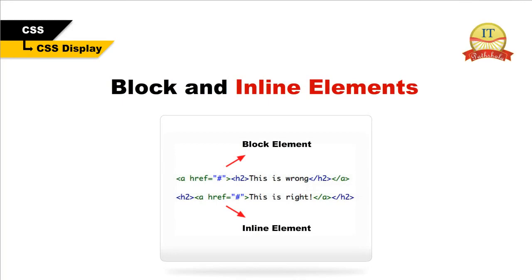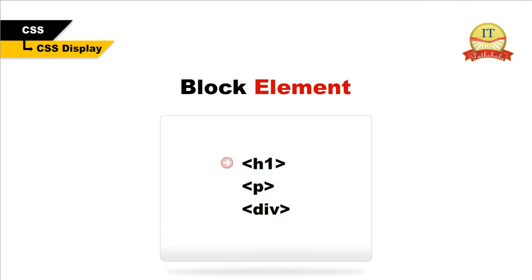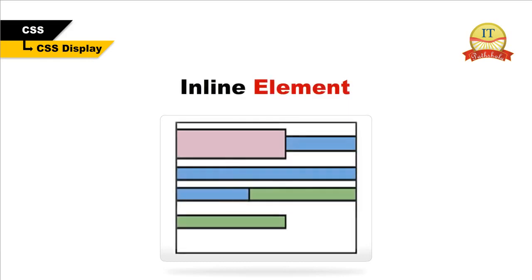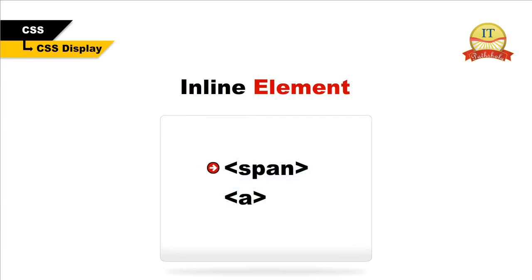A block element is an element that takes up the full width available and has a line break before and after it. Examples of block elements are h1, p, and div. An inline element only takes up as much width as necessary and does not force line breaks. Examples of inline elements are span and a.